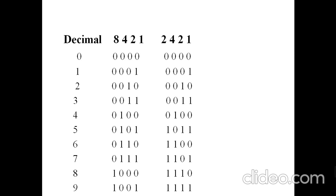For decimal four, the 8421 code is 0100 and 2421 is also 0100. For decimal five, in 8421 it is 0101 — the weights four and one add up to five. But in 2421 code, five is represented as 1011, because two plus two plus one equals five. For decimal six, 8421 gives 0110 while 2421 gives 1100.